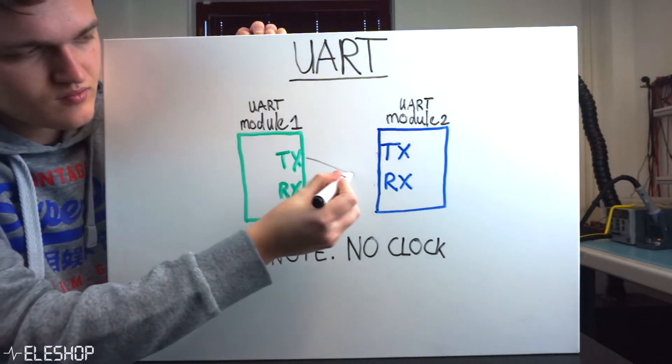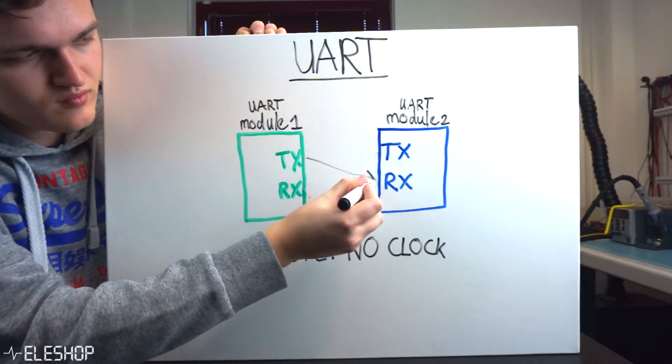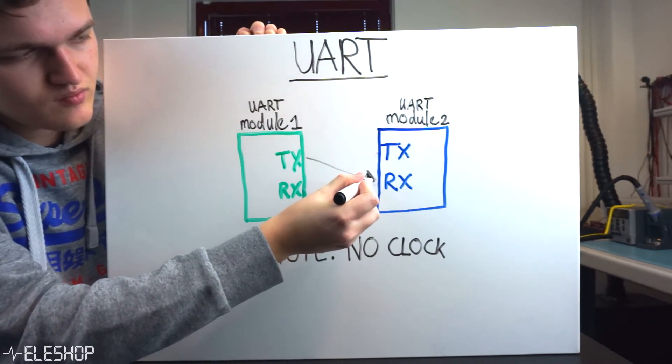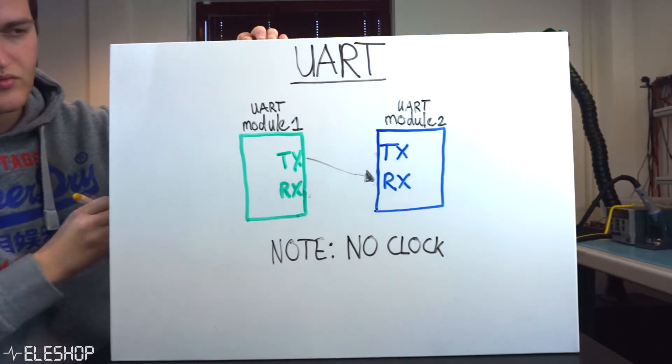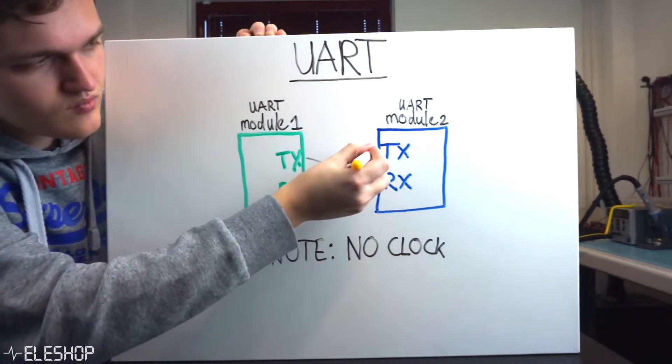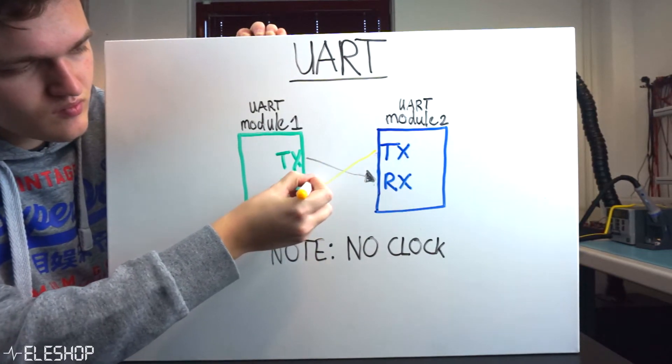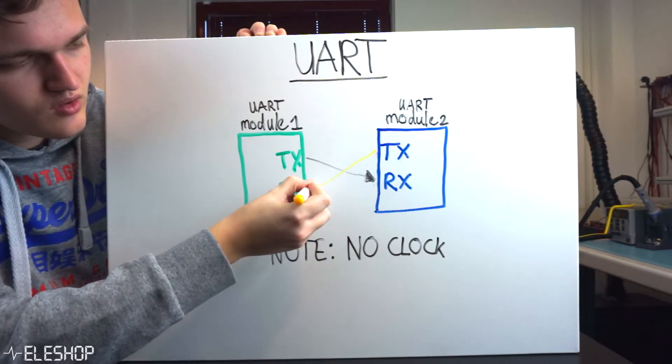The protocol again needs two lines to communicate between two modules. One line is connected from the transmitter pin of one module to the receiver pin of the other module, and the other line from the receiver pin of the first module to the transmitter pin of the other module.